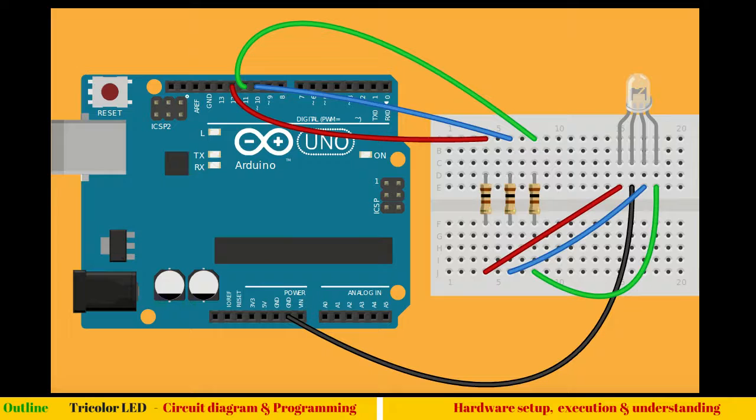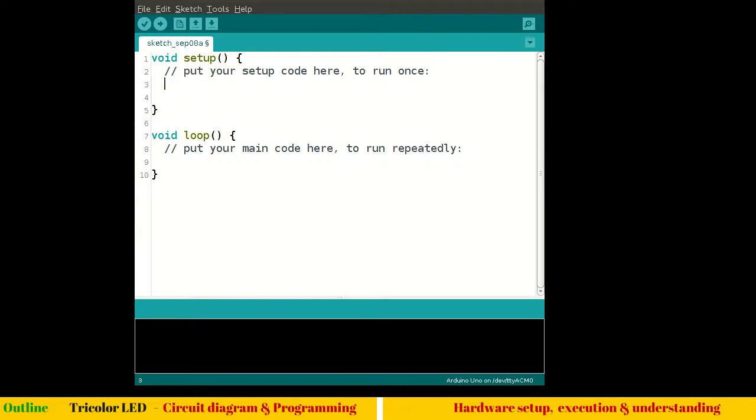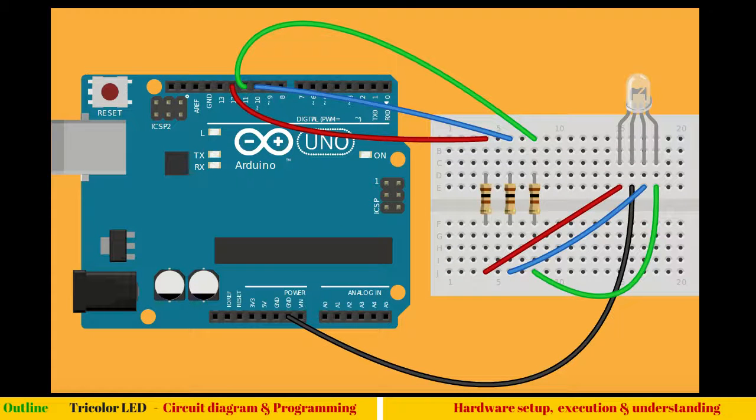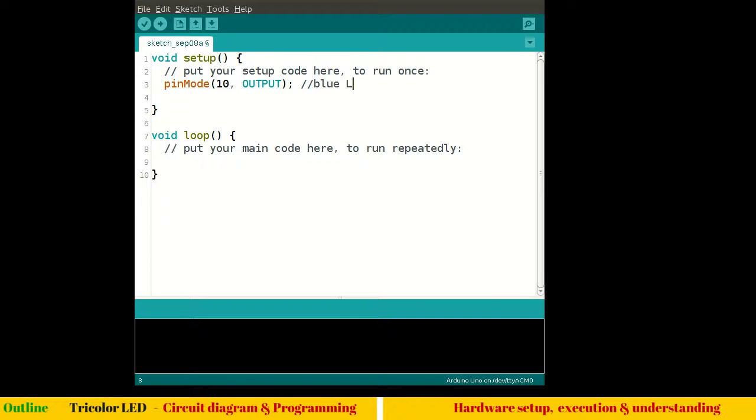We know that pin 10, 11 and 12, they are blue, green and red. So in the void setup, what I will write is pinMode pin number 10 output. Let me give a small comment to help me later. Pin number 10 we can see is blue LED.